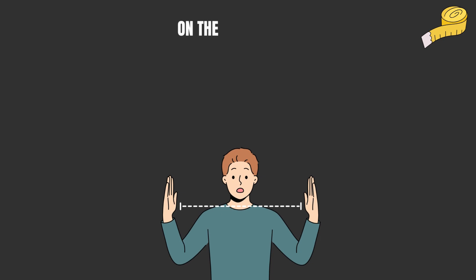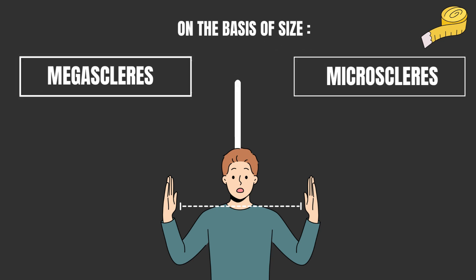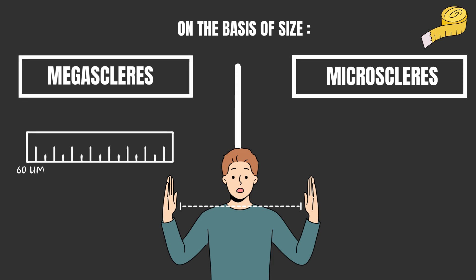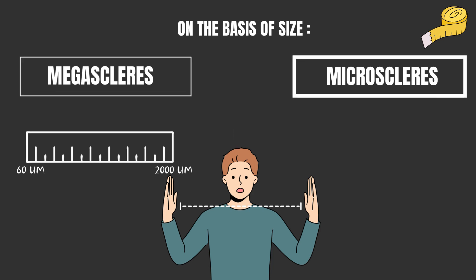On the basis of their size, spicules are of two types: megascleres and microscleres. Megascleres are large-sized spicules measuring from 60 to 2000 micrometers and form the main supporting framework of sponges. These are present near the dermal layer and in the wall of the sponge. All calcareous spicules and certain siliceous spicules are megascleres.